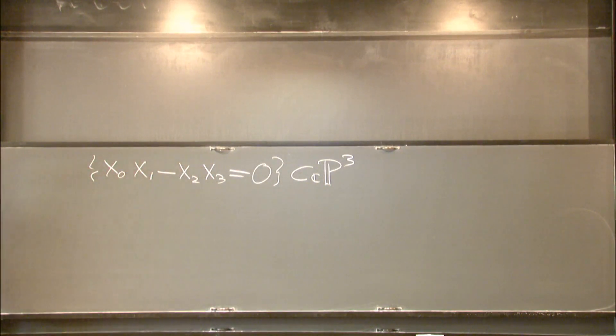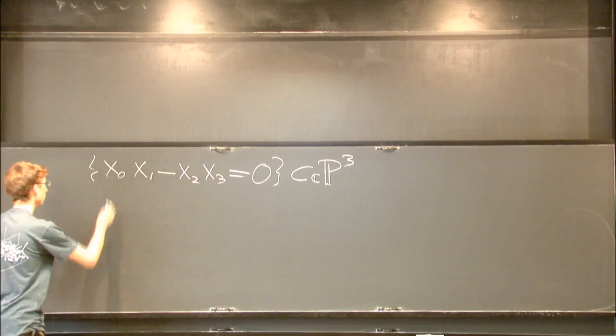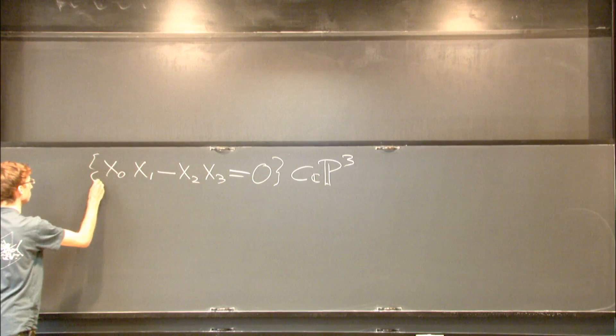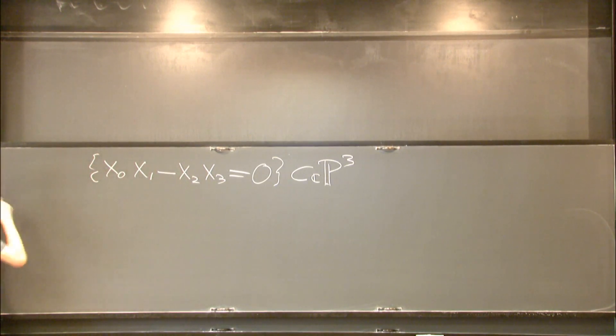I'm going to work with complex numbers throughout this talk. Because it's the zero locus of one equation, this is a complex two-dimensional object, or a real four-manifold. Let me call it X for now.